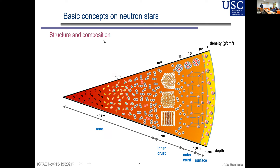We go from the crust of the star down to the inner core. All pieces are important. Even if the crust is not large — at most one kilometer — and from the point of view of mass it's negligible, we know it has important implications. For example, if you observe a deformation for continuous gravitational waves, that signal comes from the crust. Whatever you want to learn from the inner part must pass through the crust.